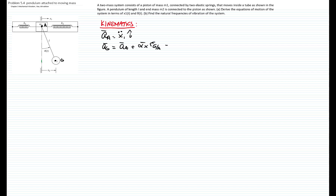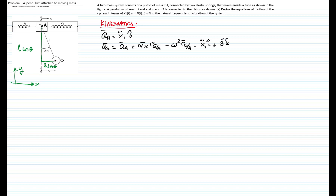Next, we calculate the acceleration of point G, which is the mass of the pendulum. We use the relative motion equation and we know the acceleration of point A. The distance between point A and point G is L cosine of theta in the vertical direction and L sine of theta in the horizontal direction. We write x1 double-dot in i, plus alpha equals theta double-dot in k, with positive rotation times the distance from G to A. We then write this equation and perform the cross product.